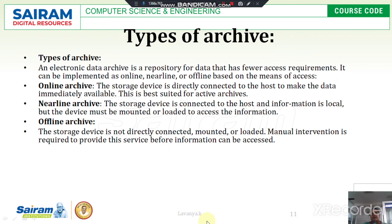There are three types of archivers: online archiver, nearline archiver, and offline archiver. In the online archiver, the storage device is directly connected to the host, and the data should be available immediately — whenever the client accesses data from Google or anywhere, the data is available immediately.